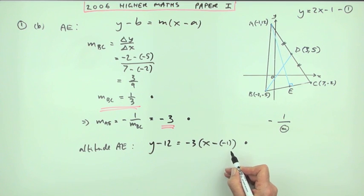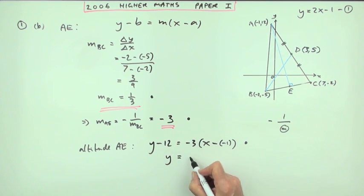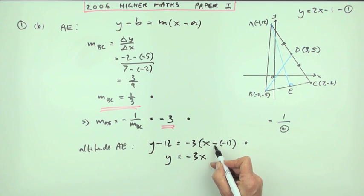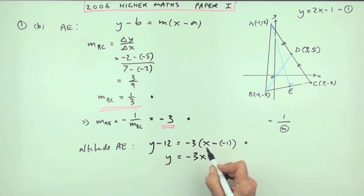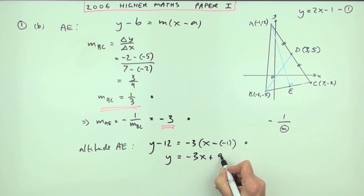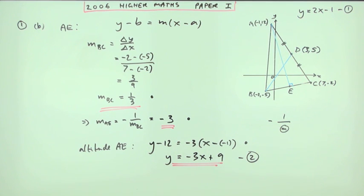Tidy that up into Y equals MX plus C form: Y equals negative 3X, plus 1 multiplied by negative 3 gives negative 3, plus 12 gives plus 9. So Y equals negative 3X plus 9 — I'll call that equation 2. No extra marks for doing this, but you'll need it for part C.